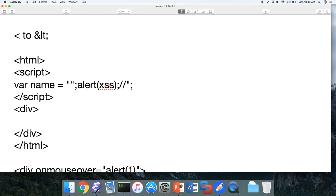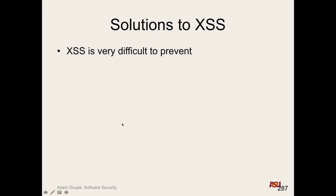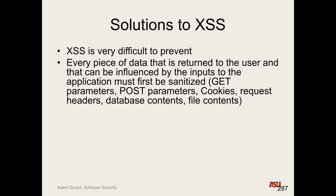There is no magic bullet sanitization that fixes everything. Different sanitization needs to be applied depending on where in the HTML the output is being used. Every piece of data returned to the user must be sanitized — GET parameters, POST parameters, cookies, request headers, database contents, file contents. What if you're pulling in content from Twitter? There are even cases of people who wrote books on web security where the cross-site scripting examples caused vulnerabilities on book websites.